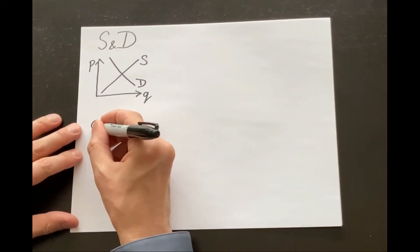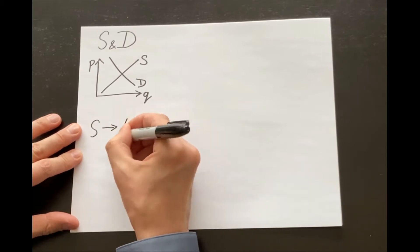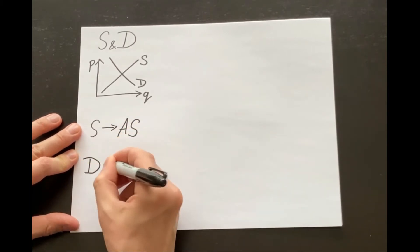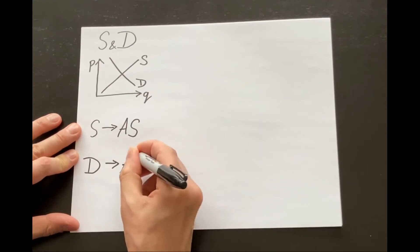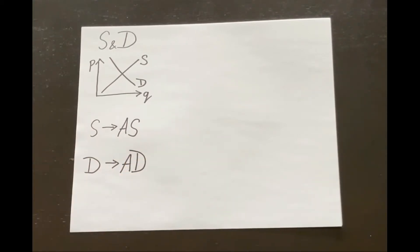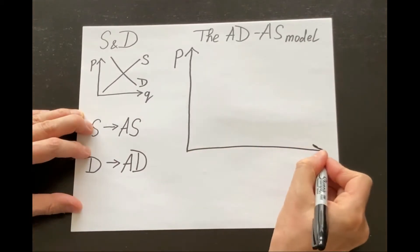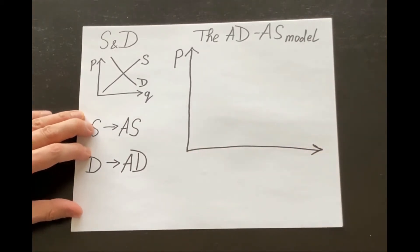Supply of one product will become aggregate supply of all goods and services produced in this country. And demand of one product will become aggregate demand for all goods and services in this economy. And the aggregate demand, aggregate supply model will look like this.